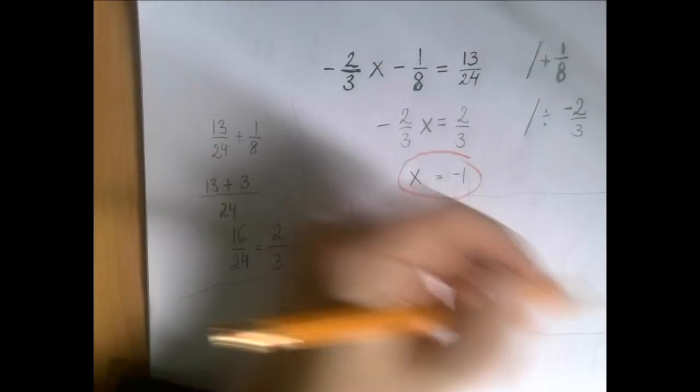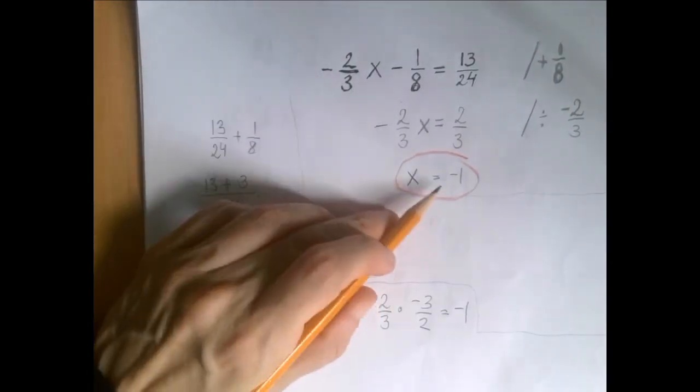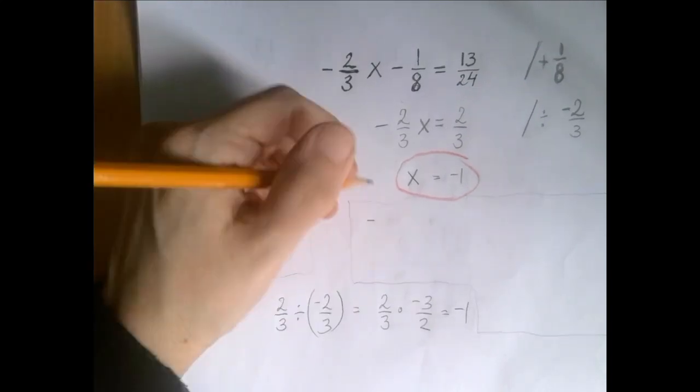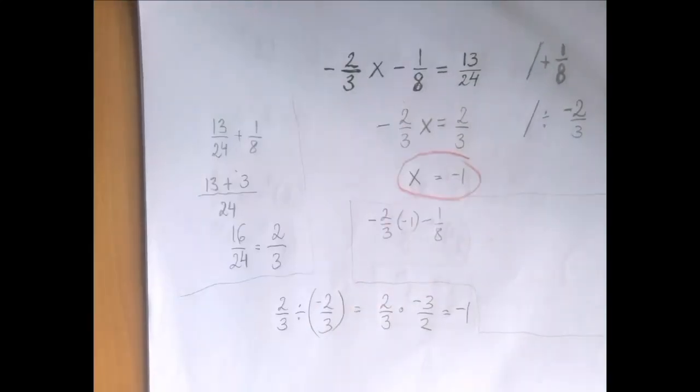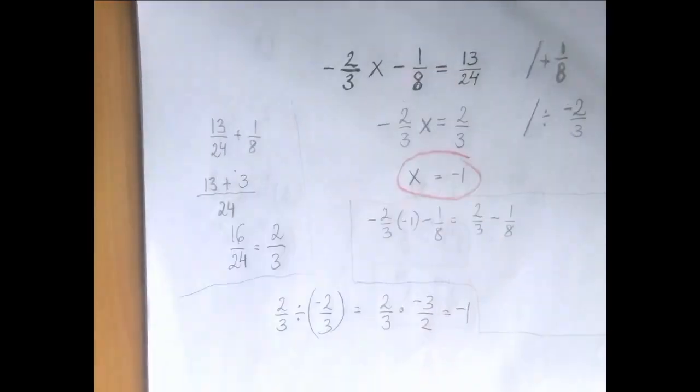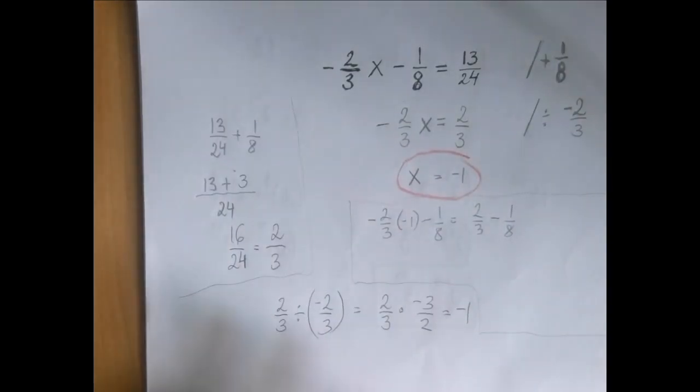Let's check. So to check we're just going to substitute negative 1 into x. So then the left hand side will become negative 2 over 3 times negative 1 minus 1 over 8. Negative 2 over 3 times negative 1 is just 2 over 3. So we have 2 over 3 minus 1 over 8.